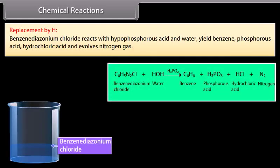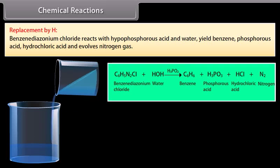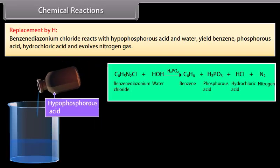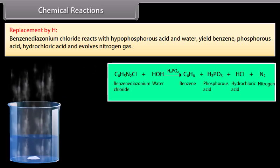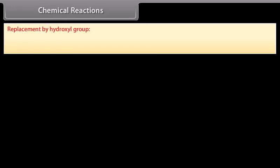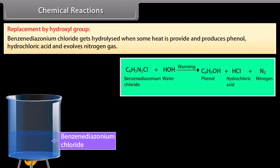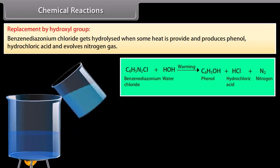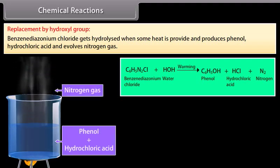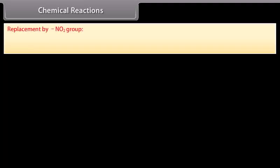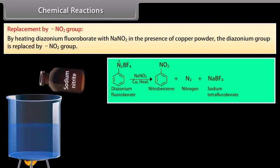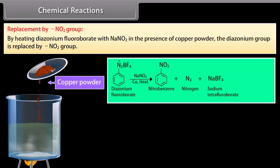Replacement by H: Benzene diazonium chloride reacts with hypophosphorous acid and water to yield benzene, phosphorous acid, hydrochloric acid, and nitrogen gas. Replacement by hydroxyl group: Benzene diazonium chloride is hydrolyzed on gentle heating to produce phenol, hydrochloric acid, and nitrogen gas. Replacement by nitro group: Heating diazonium fluoroborate with sodium nitrite in the presence of copper powder replaces the diazonium group with a nitro group.